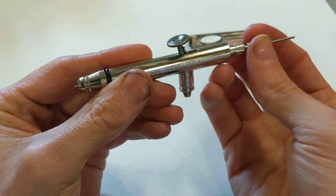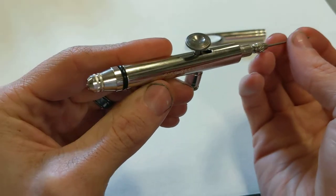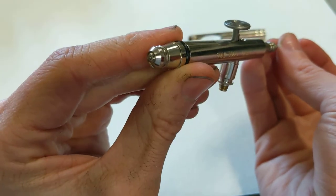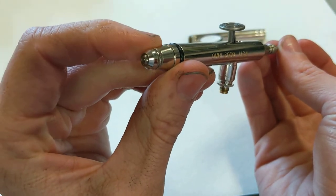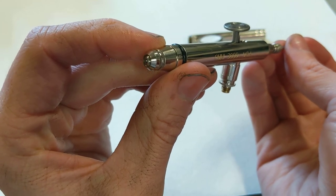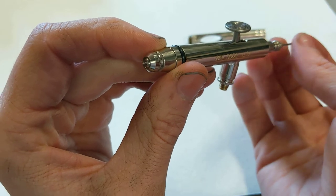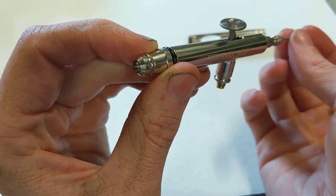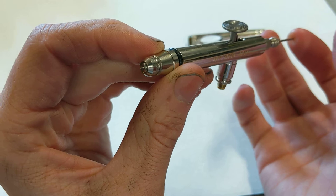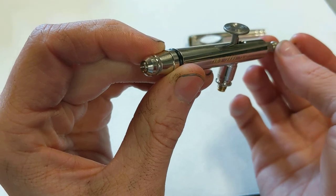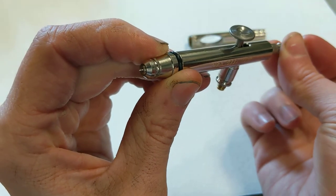So to tighten it, you want to make sure the chuck nut is loose, the needle is moving freely. You want to push the needle all the way to the front. You should see it come through the cone in the front of the airbrush. Put a little bit of pressure, not a lot of pressure, a little bit of pressure down and hold it with your fingers, my back finger there, to make sure that it stays all the way in the front. While you're doing that, tighten this chuck nut. And that locks the needle in place.